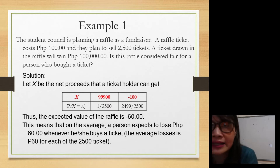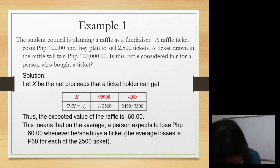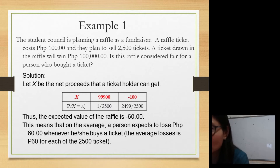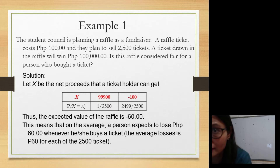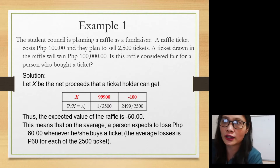What about 99,900? The probability of getting 99,900 is 1 over 2,500. Why? Because in 2,500 tickets, there is only one winner. And 99,900 is your winning prize because you already deducted the 100 pesos cost of the ticket. So what you actually gain is 99,900. That's the explanation.